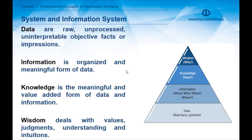Information, on the other hand, is the organized and meaningful form of data. Information by itself has a meaning, and this meaning is objective. Knowledge, on the other hand, is quite subjective — it is the meaningful and evaluated form of data and information, and is generally produced by combining data and information with human experience and analytical skills. Wisdom is a very hard concept to describe, but generally deals with values, judgments, understanding, and intuitions of humans.